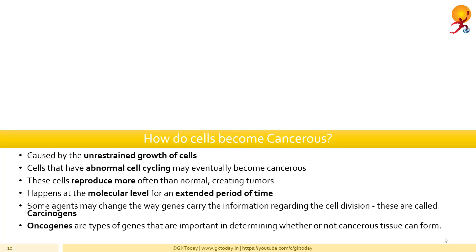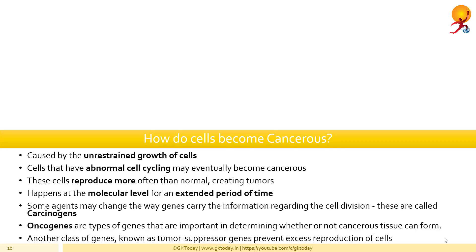In normal cells, there are types of genes that are important in determining whether or not cancerous tissue can form. These genes control the production of proteins that affect the cell cycle. Proto-oncogenes are DNA sequences that promote normal cell division. By mutation, these genes may be converted into oncogenes which promote the overproduction of cells. Another class of genes known as tumor suppressor genes prevent excess reproduction of cells. However, mutation in these genes can also cause cells to become cancerous.